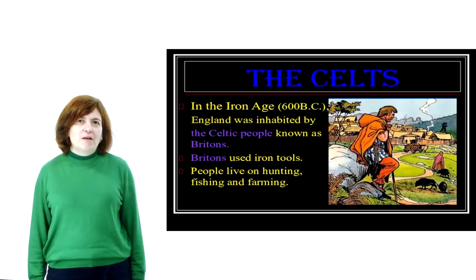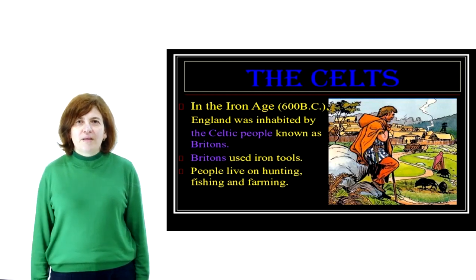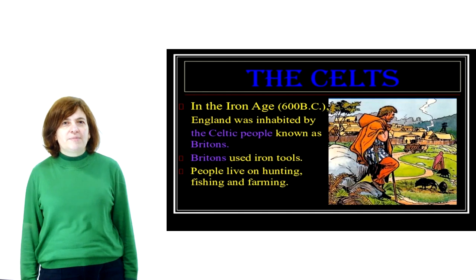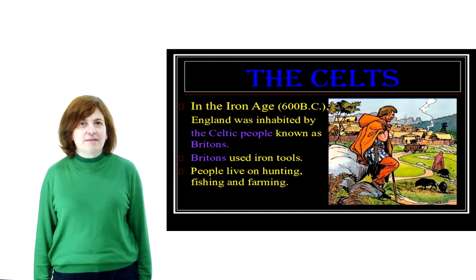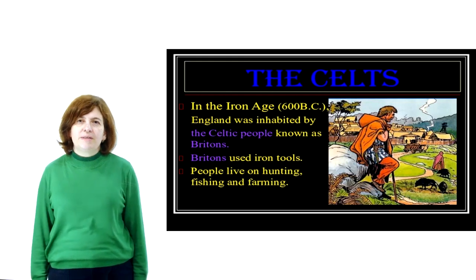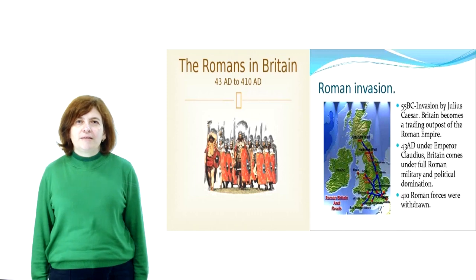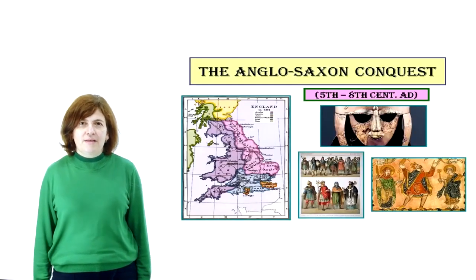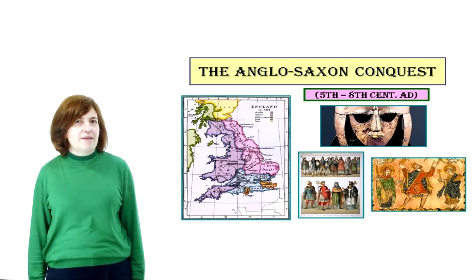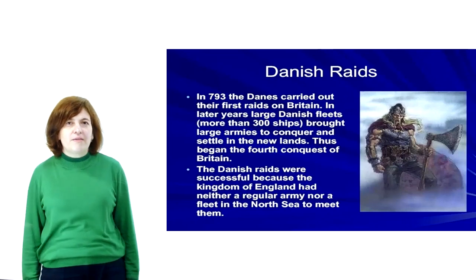To begin with, we'll focus on some points of the topic we studied at the last lecture. As you have already learned, four different peoples invaded England. First came the Celts in the 6th century BC. Then the Romans in the 1st century AD. They were followed by the Anglo-Saxons in the 5th century. After them came the Danes at the end of the 8th century.